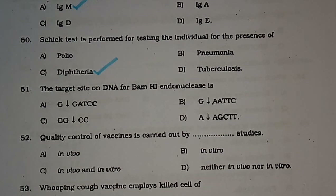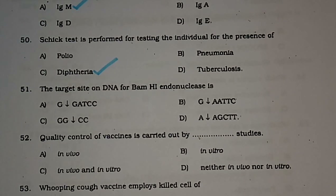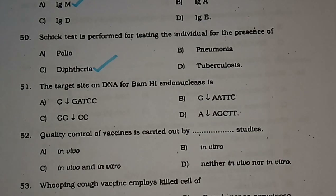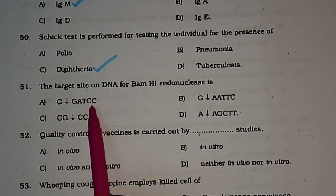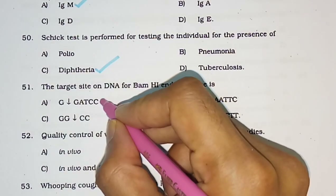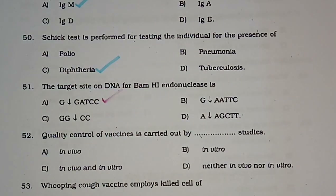Question number 51: The target site on DNA for BamH1 endonuclease is — options are (A) GGATCC, (B) GAATTC, (C) GGGCC, (D) AAGCTT. BamH1 binds at the GGATCC site and cleaves the sequence just after the guanine. So the correct answer is option A — GGATCC.